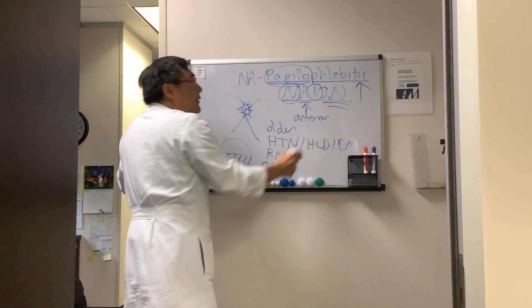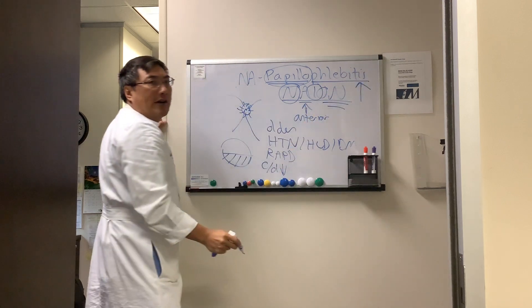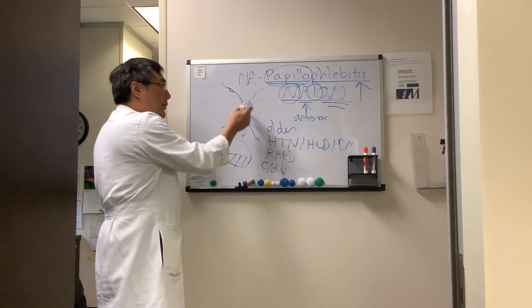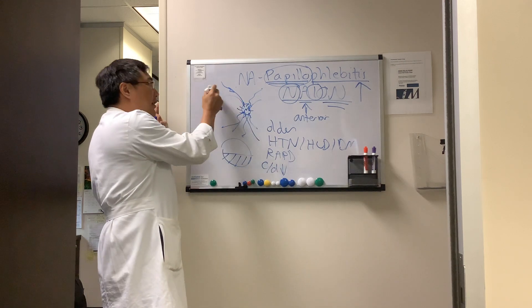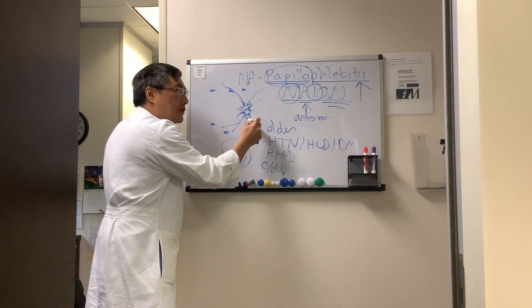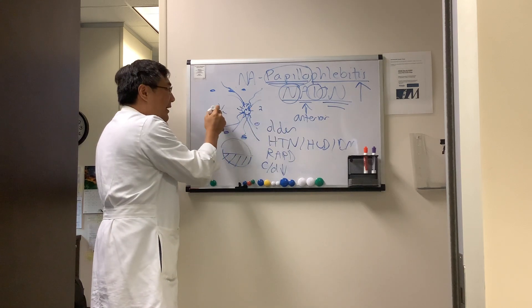In papilloflebitis, the phlebitis is the differentiating feature, which means you'll have dilated and tortuous veins. And because the vein is partially blocked, there'll be mid-peripheral intraretinal hemorrhages, and there might be macular edema.